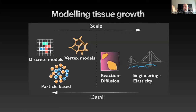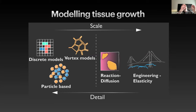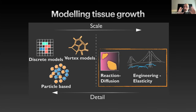For modeling tissue growth, there are many flavors you can pick depending on the scale you're interested in and the level of detail. Discrete models, vertex models, and particle-based models allow a high level of detail — you can add a lot of dynamics for particular systems — but we are limited by the number of elements we can work with. Then we can go to the other extreme, using reaction-diffusion or elasticity approaches where you can model more mesoscopic systems. In this talk, I'm going to focus on that continuum approach.